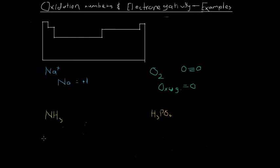Now we're going to get into some actual compounds. Here we've got an ammonia molecule. The structure helps us visualize the electronegativity in action. If we look at each covalent bond as a pair of electrons, we know the electrons are going to get pushed towards one of the atoms. Nitrogen is more electronegative than hydrogen, so it's going to have whatever oxidation number it likes.